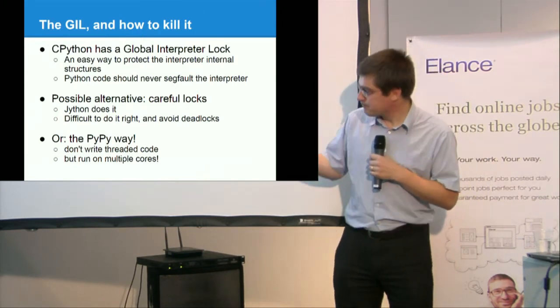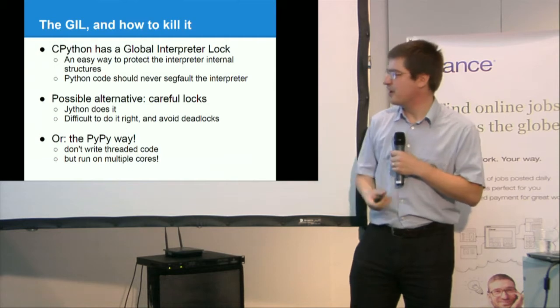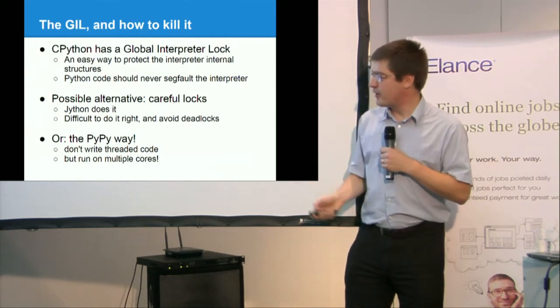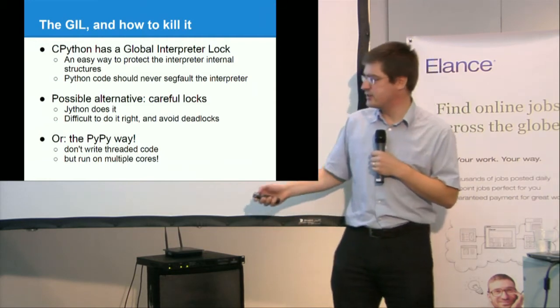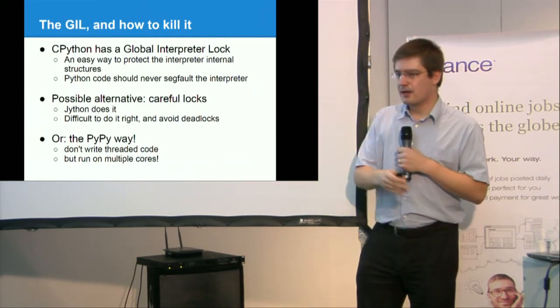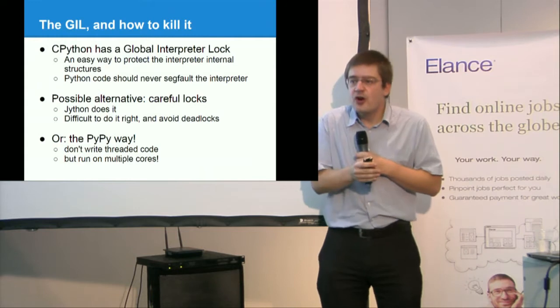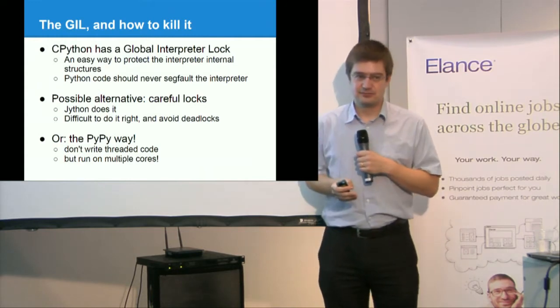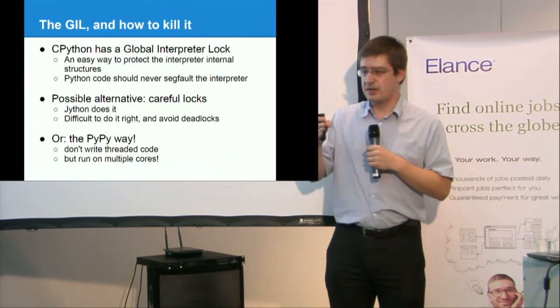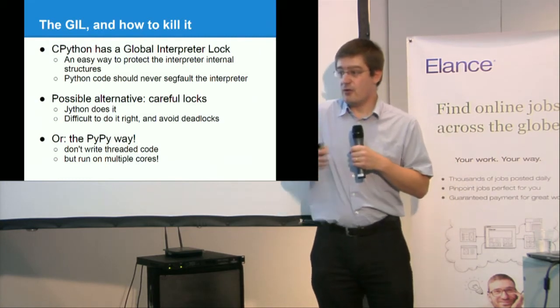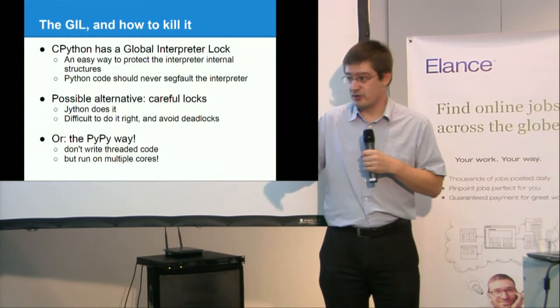So there is one possible alternative, and Jiton does it. You have careful locks around each object. It's difficult to do it, right? And it's difficult to avoid deadlock. I think there is a proof somewhere that there is no guarantee that Jiton cannot deadlock because of those careful locks. So it's quite difficult to maintain correctly. Or, the PyPy way, which is a bit different, don't write threaded code, but run on multiple cores. Because this is what you want.